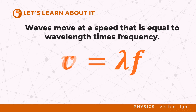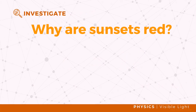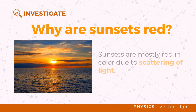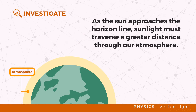Why do you think our sunsets are red? Sunsets are mostly red in color due to the scattering of light. As the sun approaches the horizon line, sunlight must traverse a greater distance through our atmosphere, and the appearance of the sun changes with the time of day.